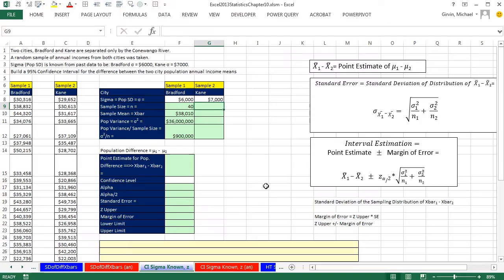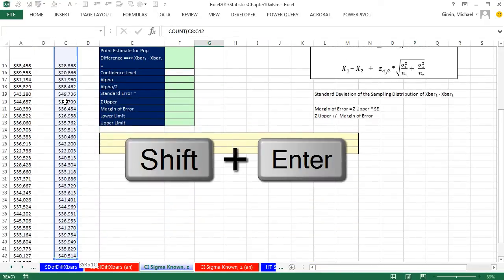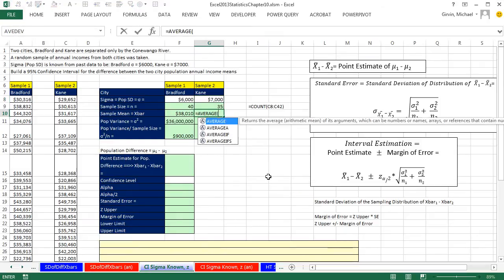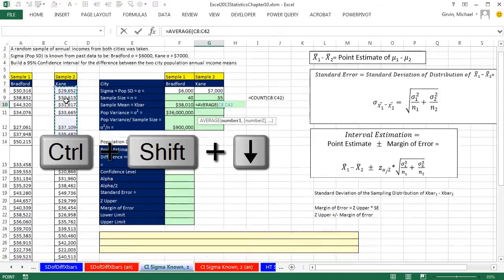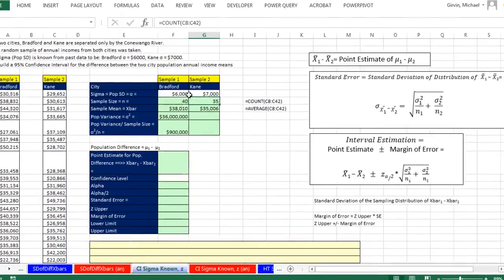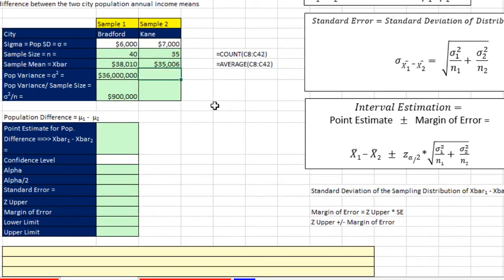Now let's go ahead and do it for Kane. Equals count, because we're counting numbers. Control-Shift-Down-Arrow, Shift-Enter. The mean equals average. Click on the top cell, Control-Shift-Down-Arrow, Shift-Enter. Now we can calculate our population variance for sample two equals 7,000. And when we square that, it better give us 49 with six zeros, and sure enough, it does. Now we'll calculate this little inside part right there, equals the variance for population two divided by sample size two.